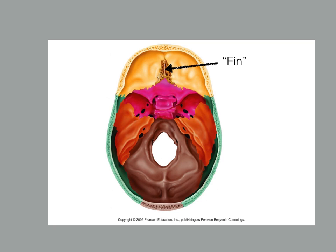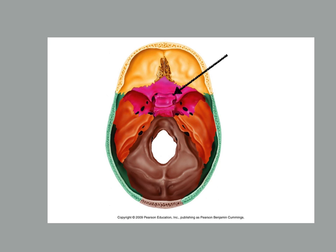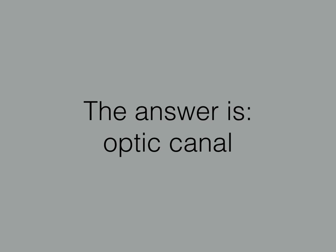There's a little shark fin — that's what we've been calling it in class — a structure that sticks up out of there. That is the crista galli. Opening here. That is the optic canal. That's what your optic nerve passes through.